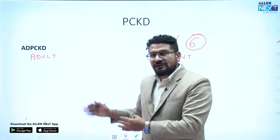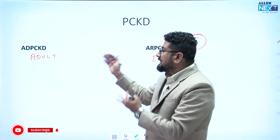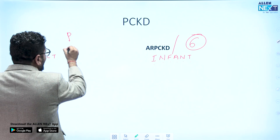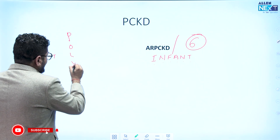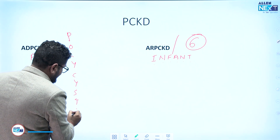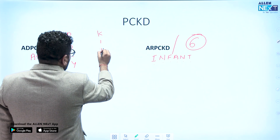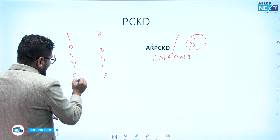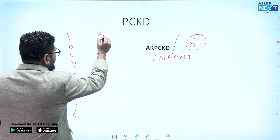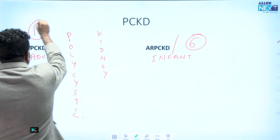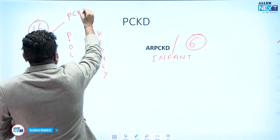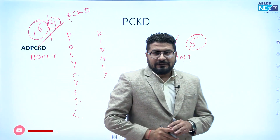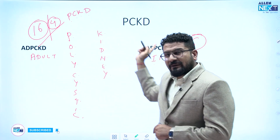For ADPCKD, in general when we say PCKD we assume ADPCKD. The patient will have many cysts in the kidney and sometimes in the liver. If you count 'polycystic kidney' — 1 through 16 — chromosome number is 16. Alternatively, counting another reference gives 4. So the bottom line: ADPCKD is at chromosome 16 and 4, while ARPCKD is at chromosome 6.